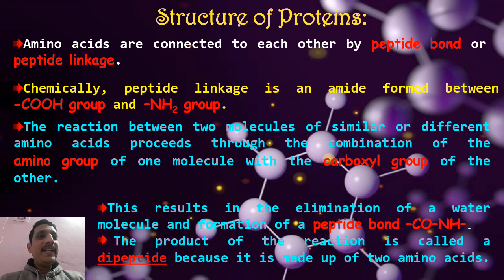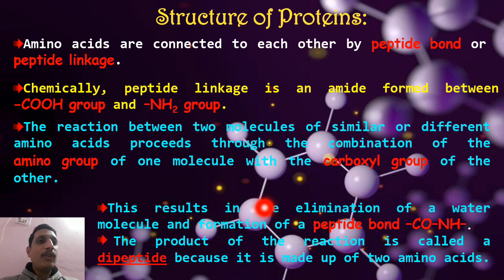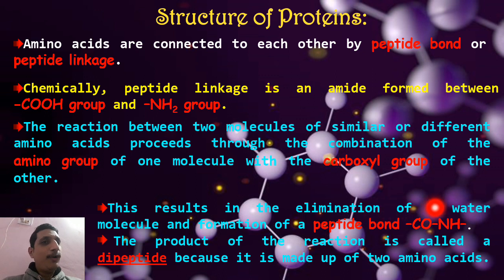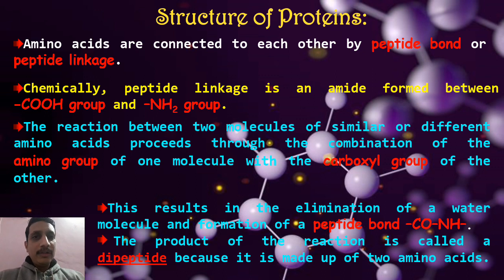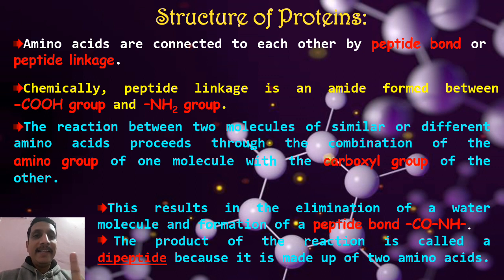The reaction between the amine group and the carboxylic group results in the elimination of a water molecule and forms a peptide bond — the C=O–NH bond. The product of this reaction is called a dipeptide. Whenever two similar or different amino acids react together forming a peptide bond, the product formed is called a dipeptide. A dipeptide contains one peptide linkage.